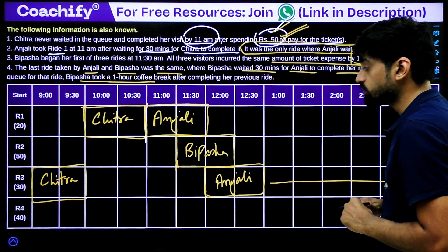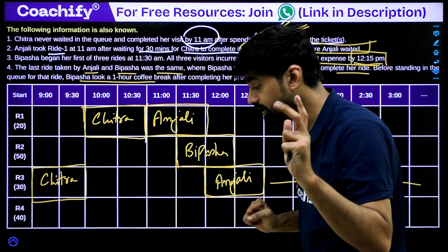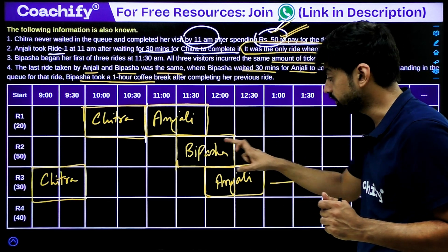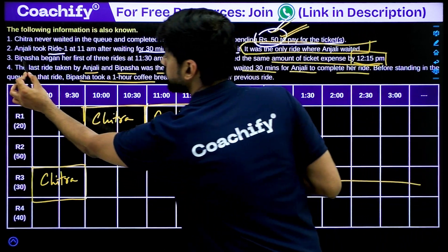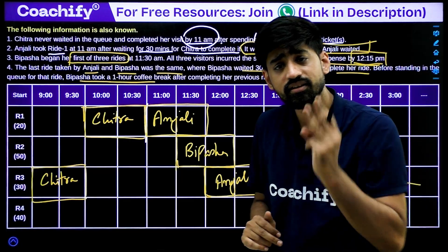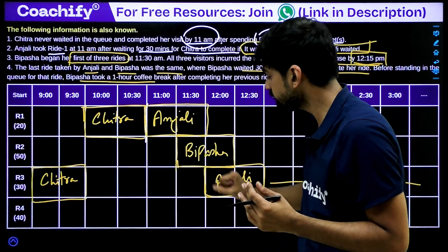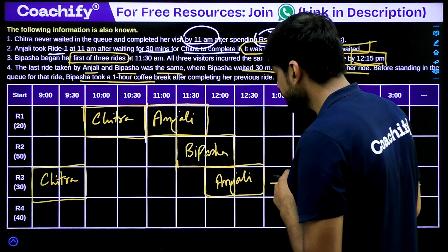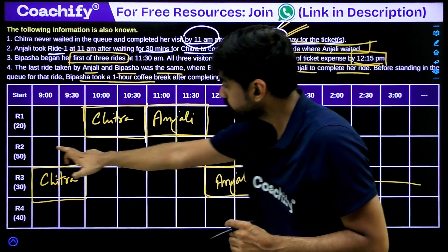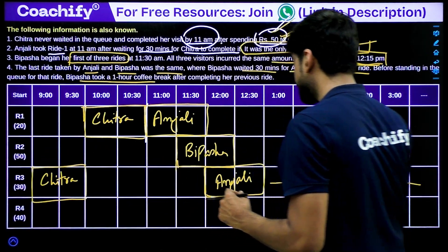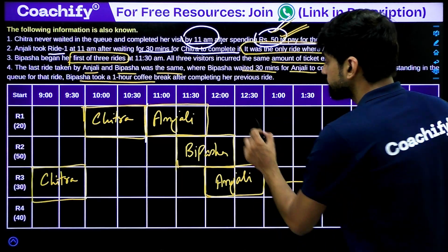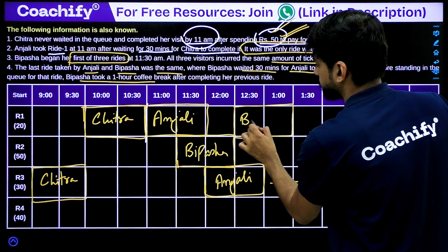Bipasha took three rides total: ride 2 at 11:30, then a third ride is needed. She cannot repeat a ride, and she can't go before 12:15 since she needs to match the 50-rupee constraint. The only remaining option is ride 1. So Bipasha takes ride 1 after ride 2. This is confirmed as Bipasha's second ride.